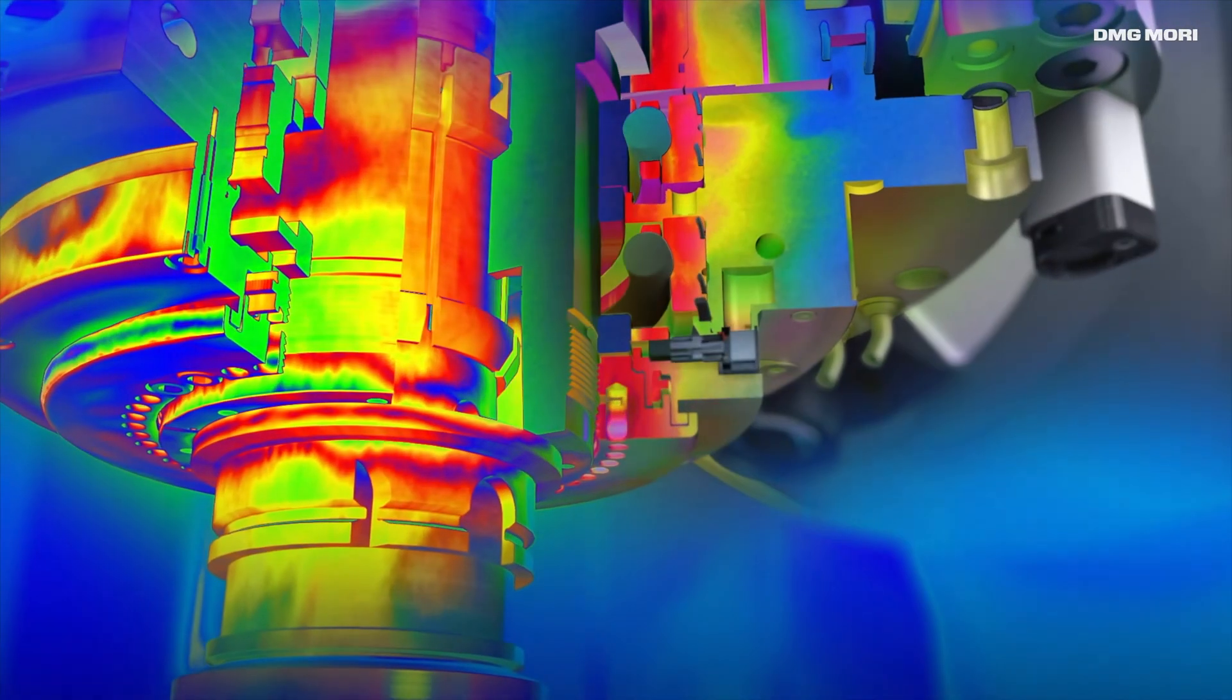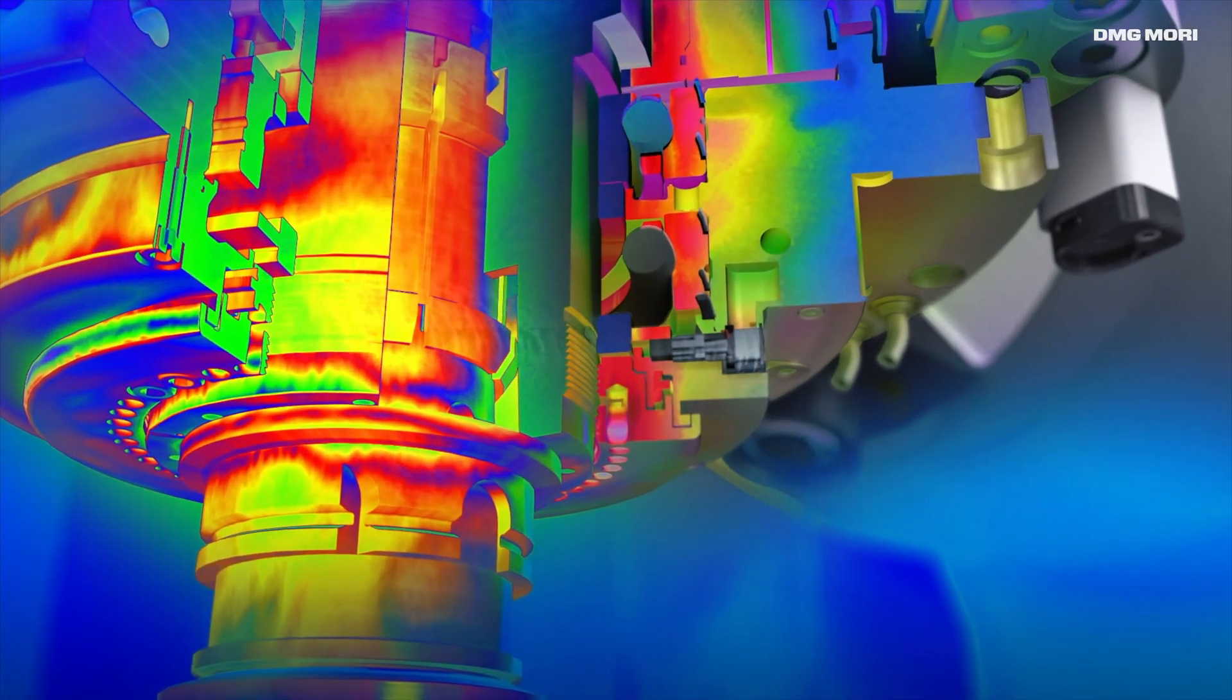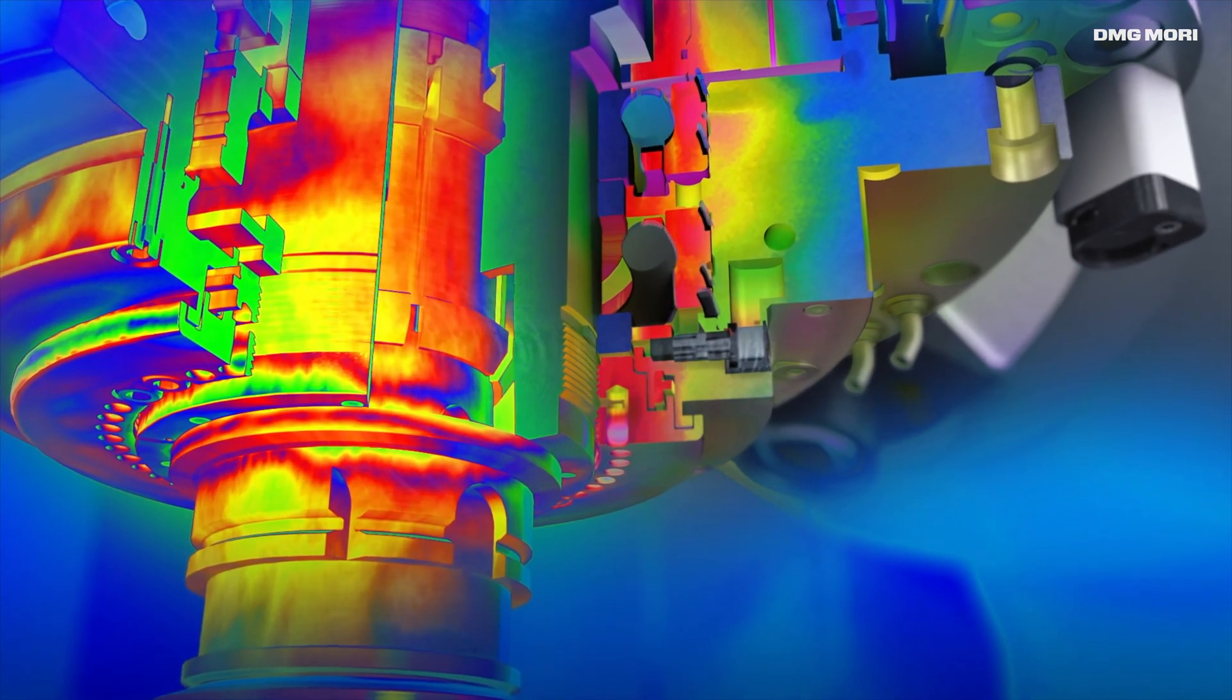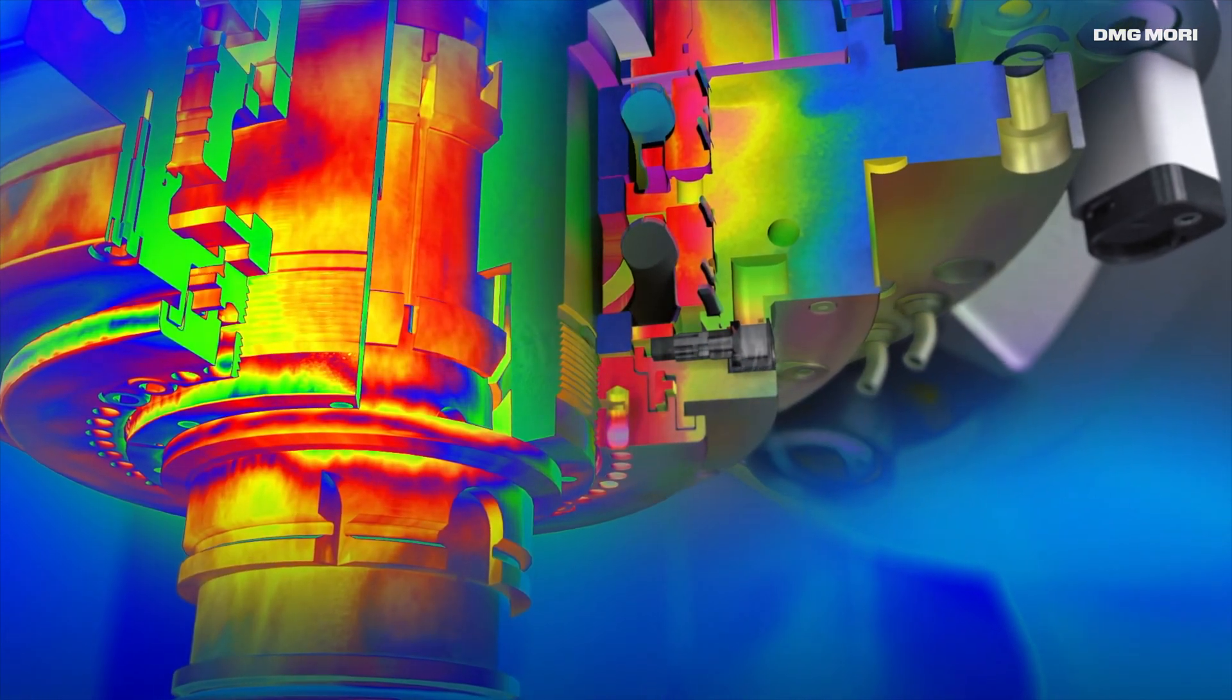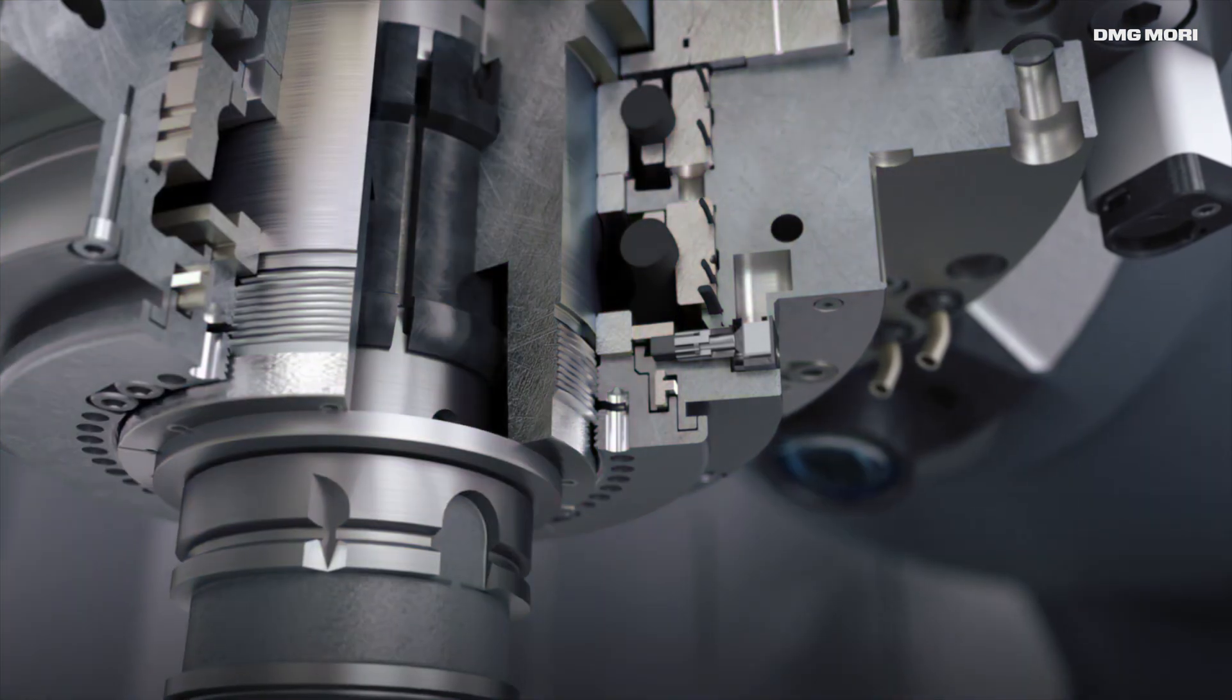The motor spindle is our main heat source within the machine tool. The SGS sensor monitors and compensates for temperature and speed-related influences in real-time.